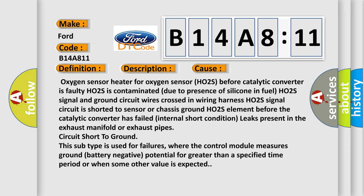Circuit short to ground. This subtype is used for failures where the control module measures ground battery negative potential for greater than a specified time period or when some other value is expected.